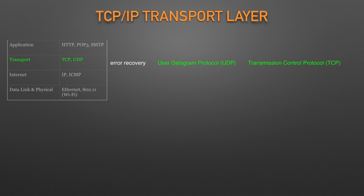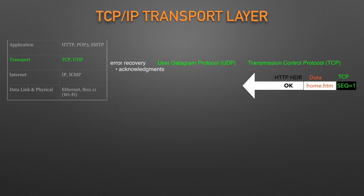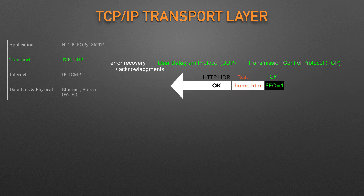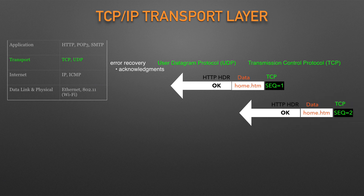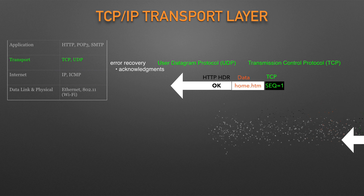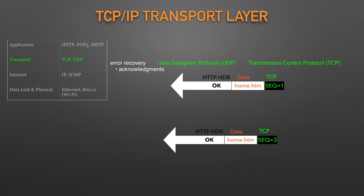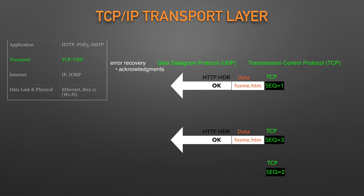TCP/IP needs a mechanism to guarantee delivery of data across a network, so the creators of TCP included an error recovery feature. To recover from errors, TCP uses the concept of acknowledgements. The TCP header shows a sequence number with each message. If the network has a problem and fails to deliver the TCP message, called a segment — for example, the segment with sequence number 2 was lost — TCP logic causes TCP to send a TCP segment back to the server asking to send message 2 again.